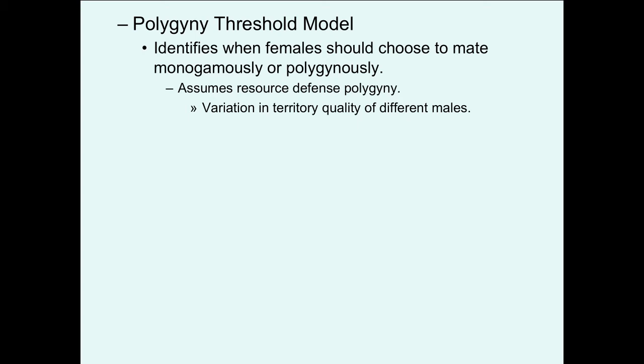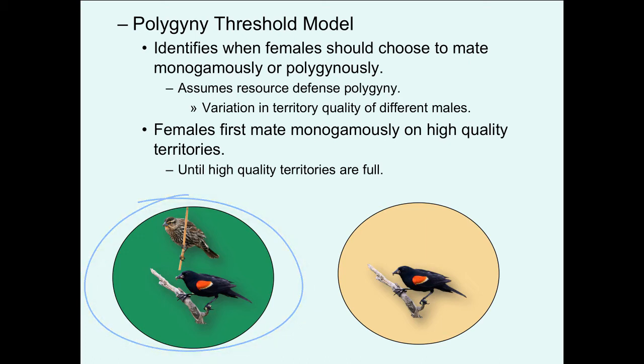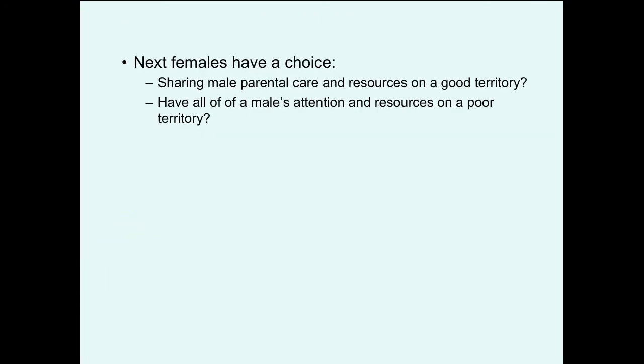The polygyny threshold model attempts to identify when females should choose monogamous versus polygynous mating. It assumes resource defense polygyny and great variation in territory quality. Early in the breeding season, the first females mate monogamously, choosing the highest quality males with the highest quality territories, until the high-quality territories are full. The next females then face a choice.